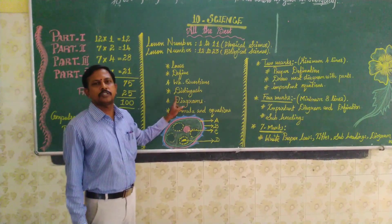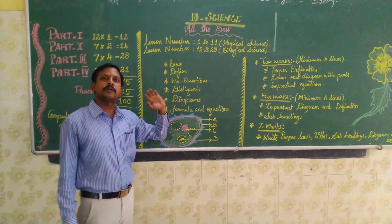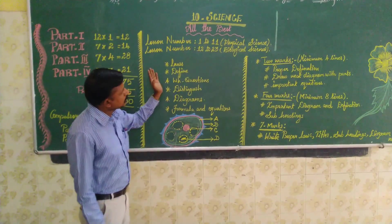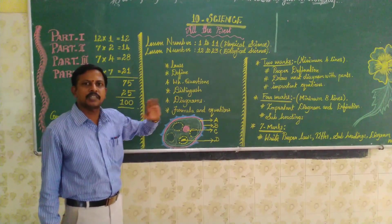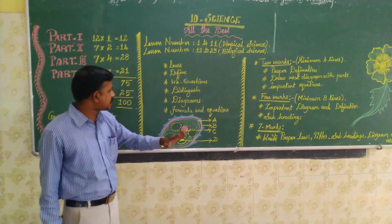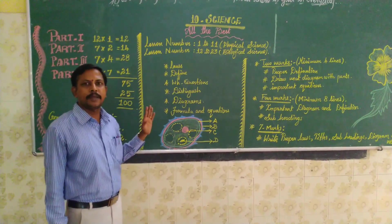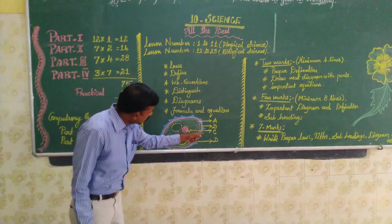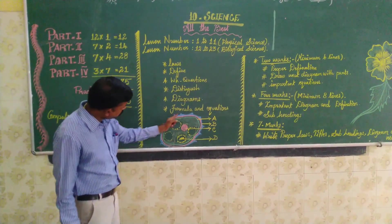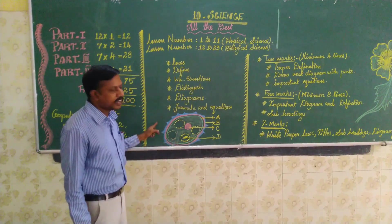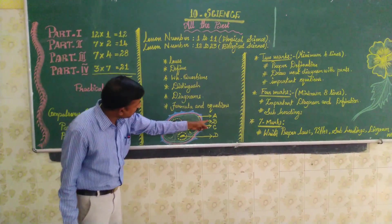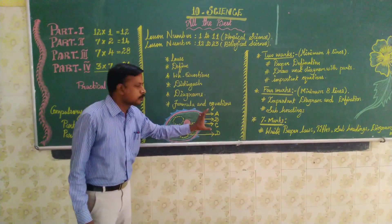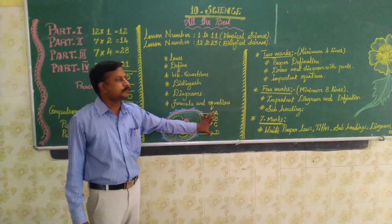The diagrammatic question is very, very important for the 2-marks, 4-marks, and 7-marks — everything. It asks the diagrammatic question. For example, in this law, see this diagram. They have given A, B, C, E. So you have to identify the parts and write.